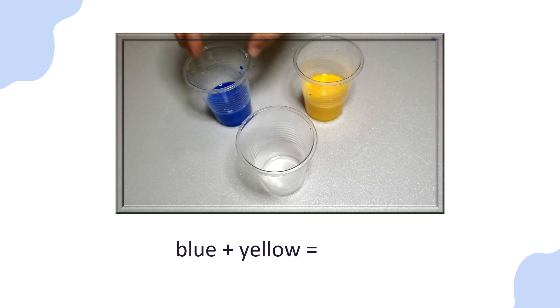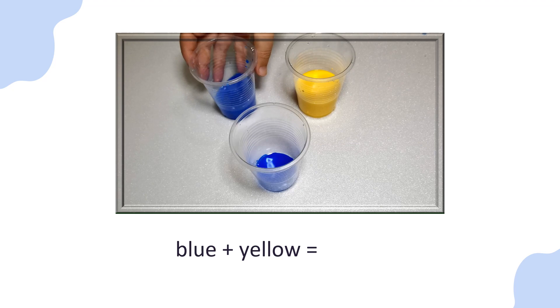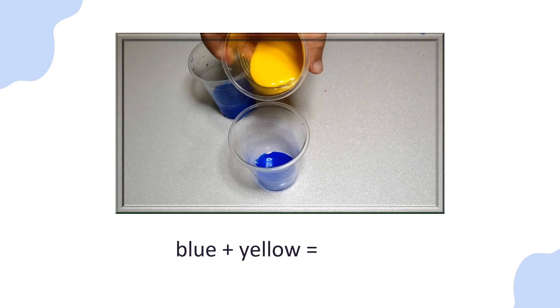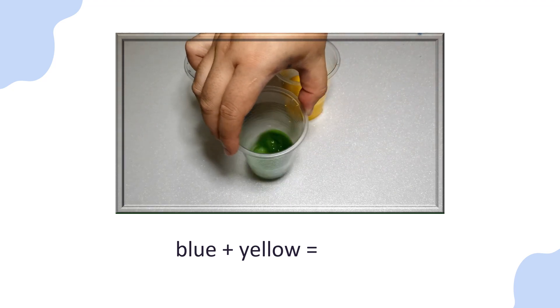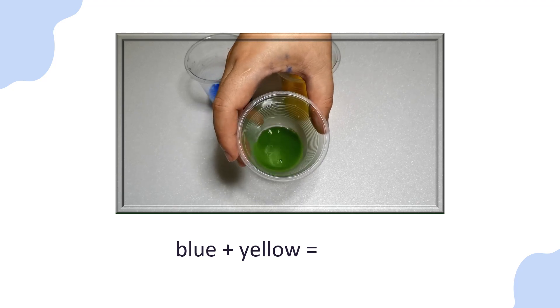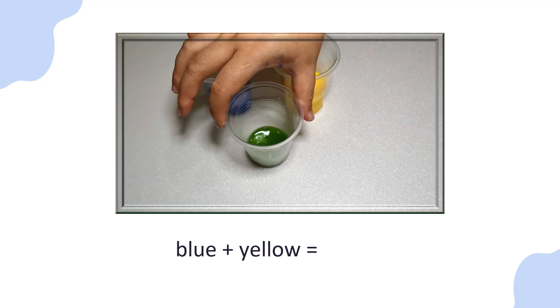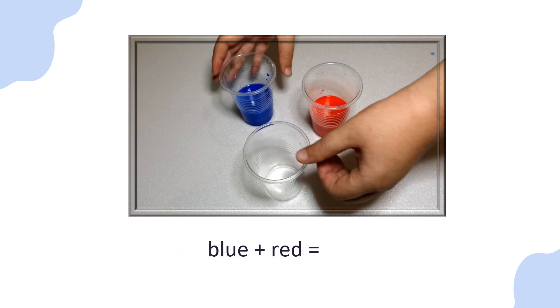Now let's mix blue with yellow. What will it become? It is green. Blue mix yellow is green.